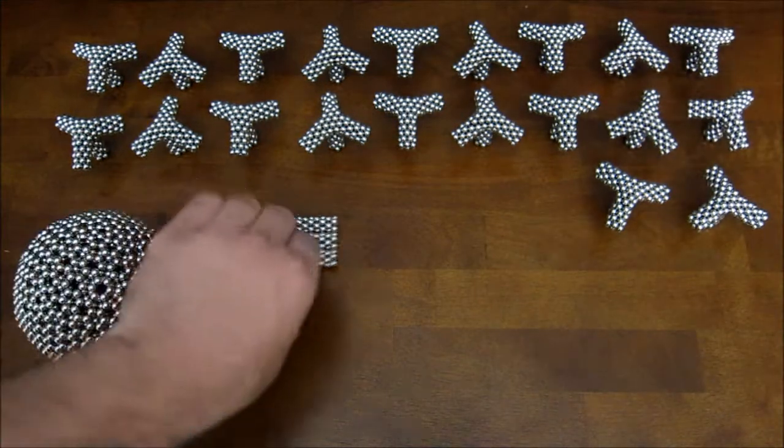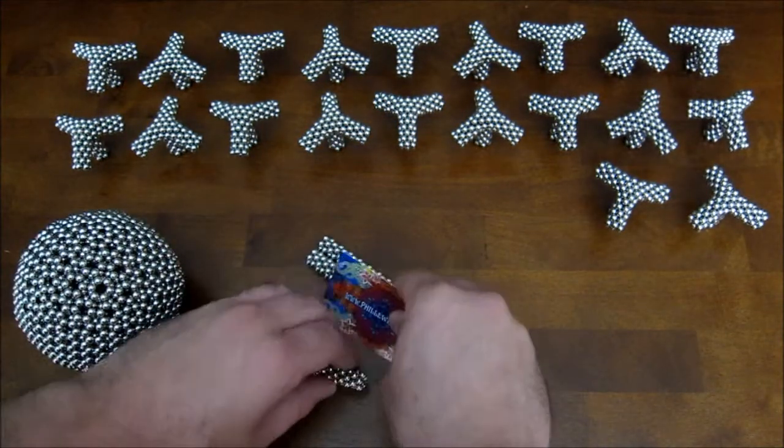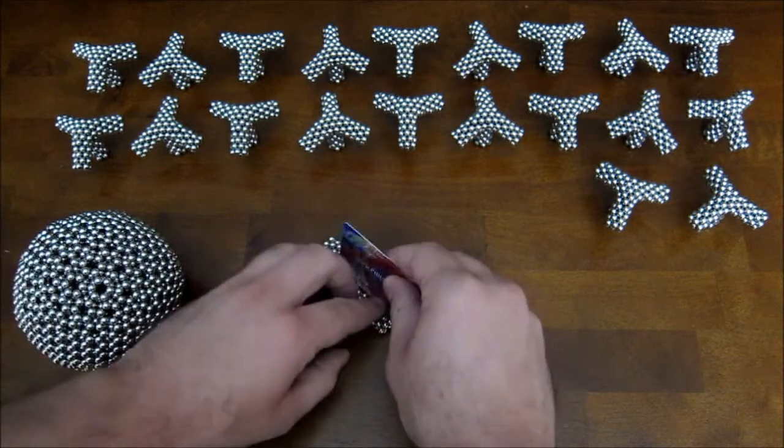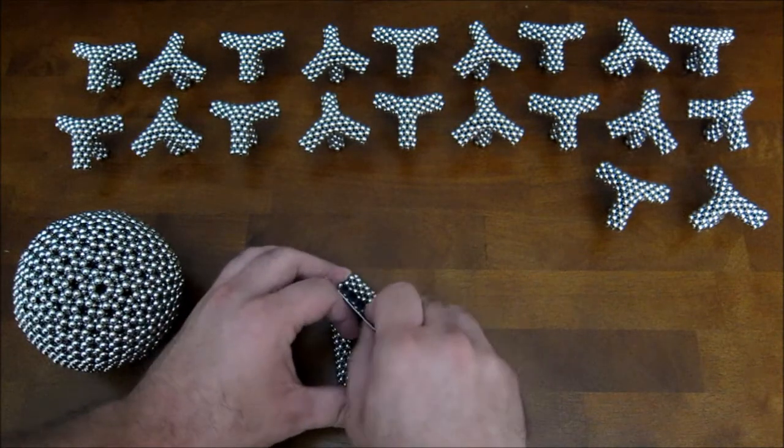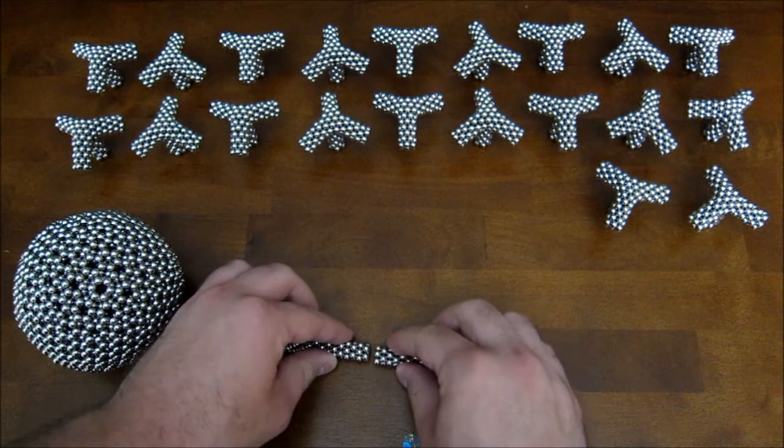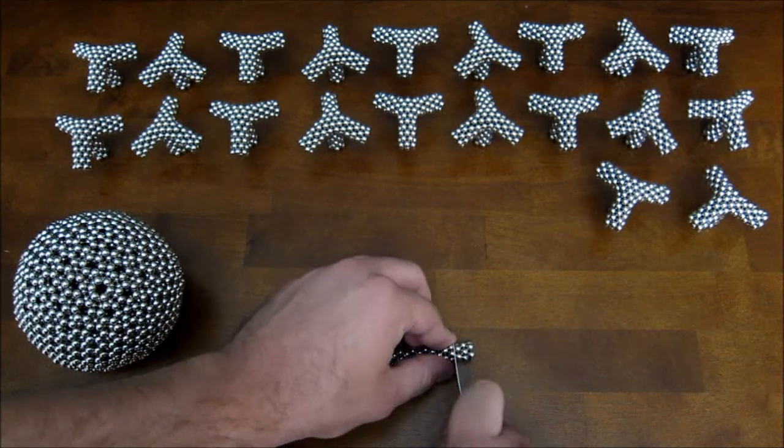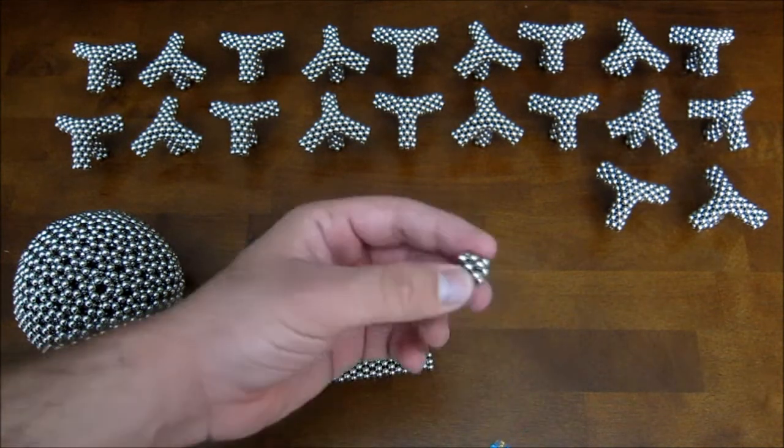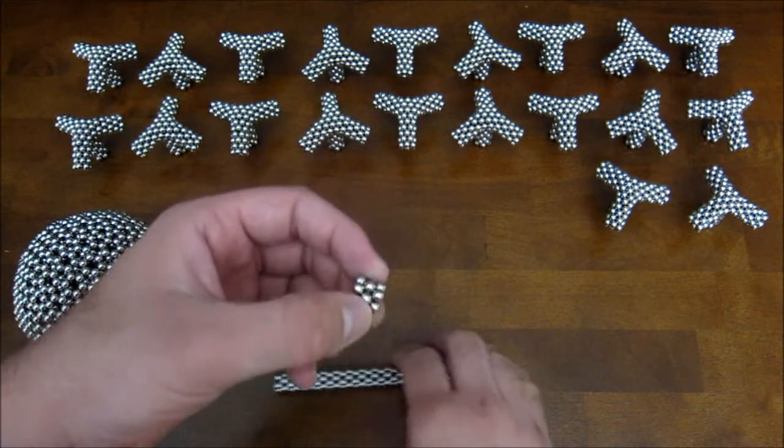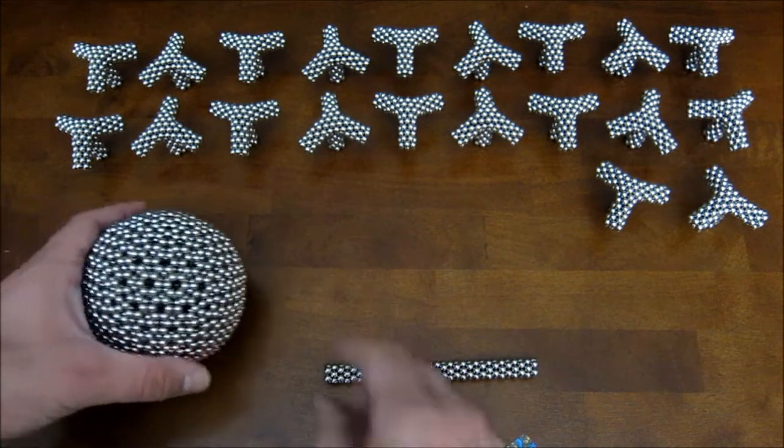So the first thing that you do to start assembling this thing is you take 36 of your 48 pentagon rings and you cut them up into stacks of three.